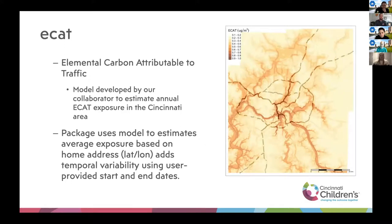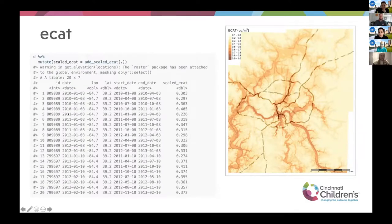One specific package is ECAT, which stands for elemental carbon attributable to traffic. This estimates exposure at the home address based on exact point latitude and longitude, and averages exposure over provided start and end dates. Using the add_scale_ecat function on a data frame with latitude, longitude, start date, and end date, you get a new column with the average ECAT exposure between those dates at that location. This only works for the Cincinnati area because that's where the model was developed.